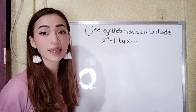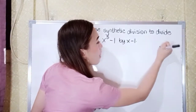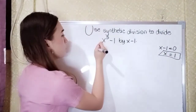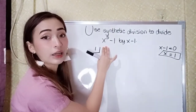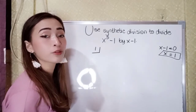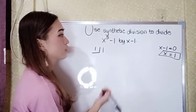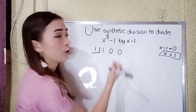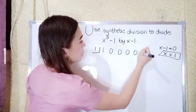For the last example, use synthetic division to divide x raised to the 5th power minus 1 by x minus 1. Our divisor: equate x minus 1 to 0, so x equals positive 1. The highest exponent is x to the 5th power, so we get coefficients: 1, then 0 for x to the 4th, 0 for x cubed, 0 for x squared, 0 for x, and negative 1 as the constant.